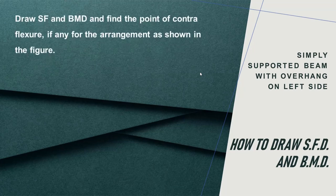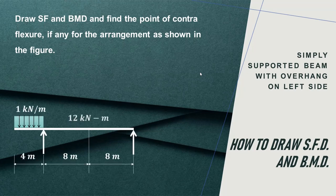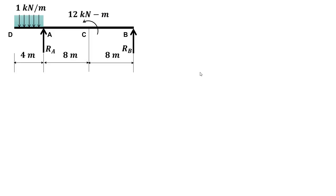In this video we will try to understand how to find out the point of contraflexure in case of an overhanging beam as shown in the figure. The beam has a left hand side overhang of 4 meters, carries a uniformly distributed load of 1 kilonewton per meter, and an anti-clockwise moment of 12 kilonewton meter at point C.